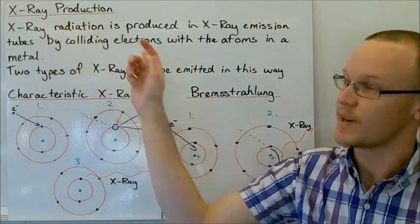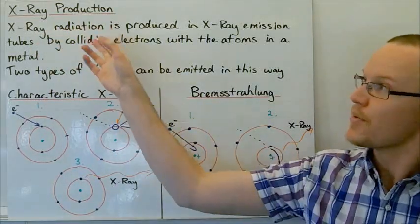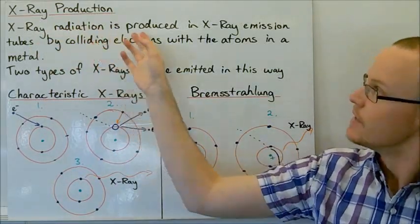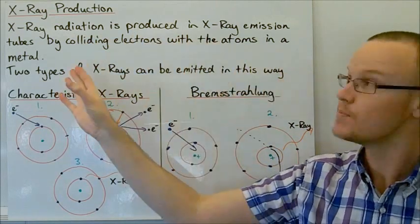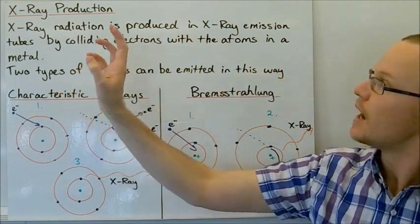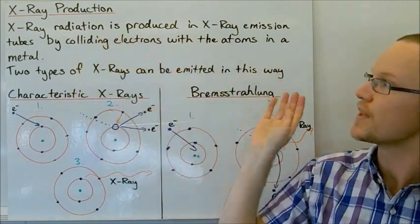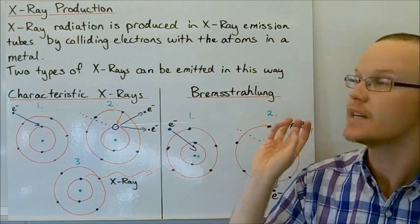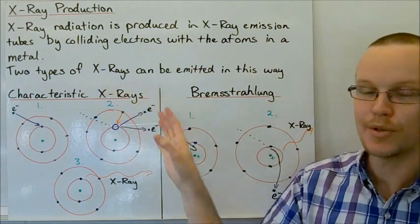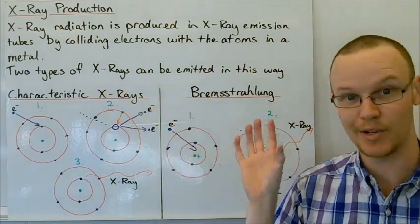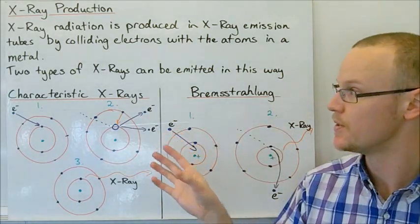Today we're going to talk about X-ray production. X-ray radiation is produced in X-ray emission tubes by colliding electrons with the atoms in a metal. There are two types of X-rays that can be created through this method.